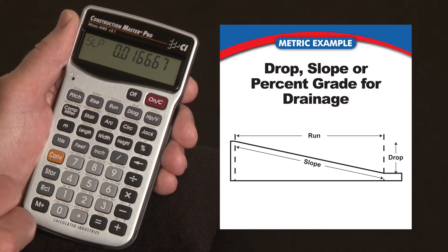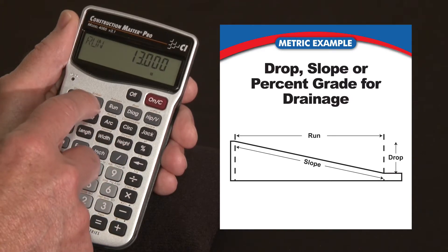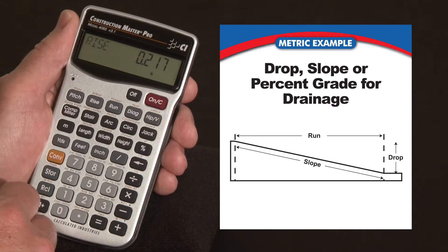Now say the length of this driveway is 13 meters. Call that the run, and then we just hit the rise key and it'll give us the vertical change or the amount of drop. So that says it's going to drop 217 millimeters lower at the other end than this end.